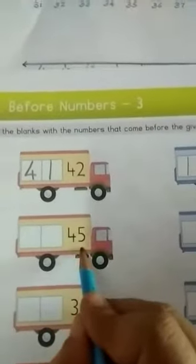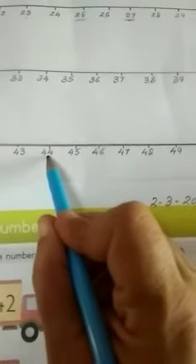Next, 45. See, look at on this number line, 45. So, 44 comes before this 45. 44.